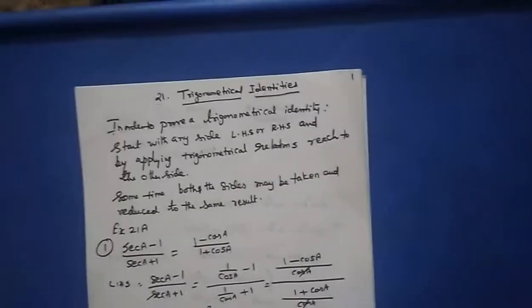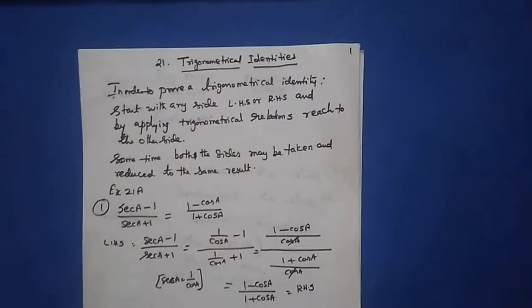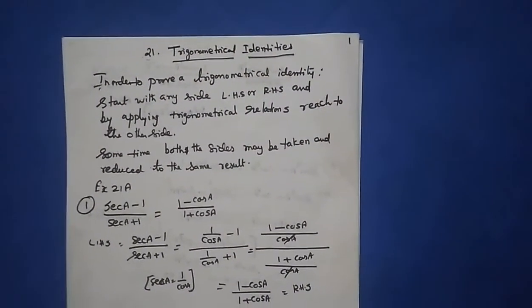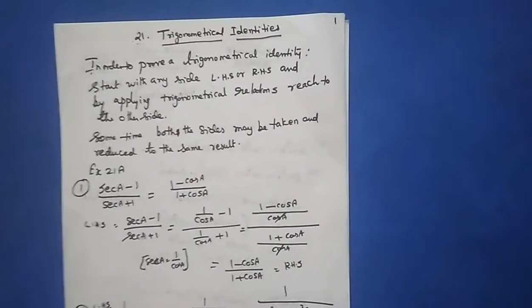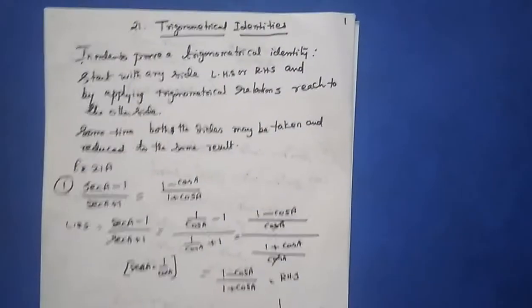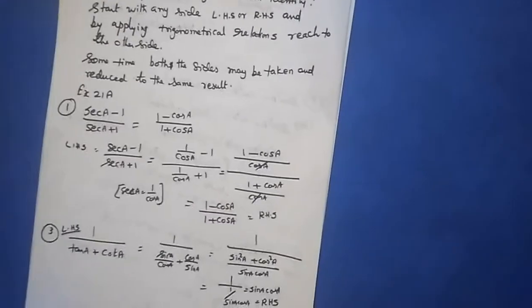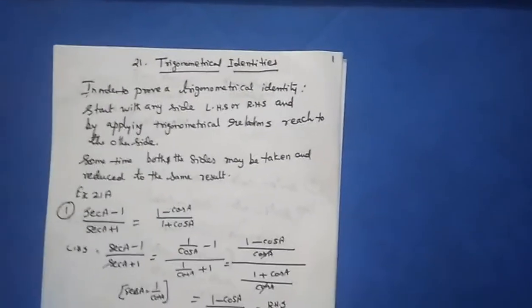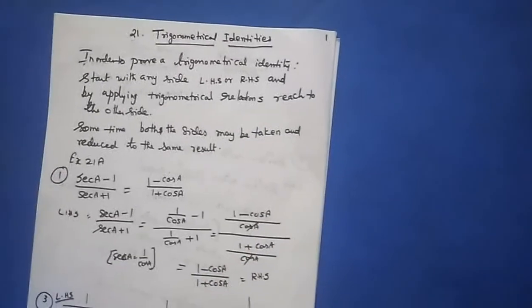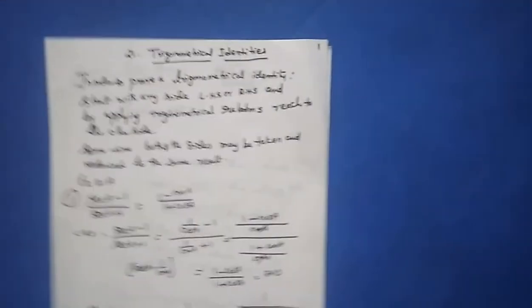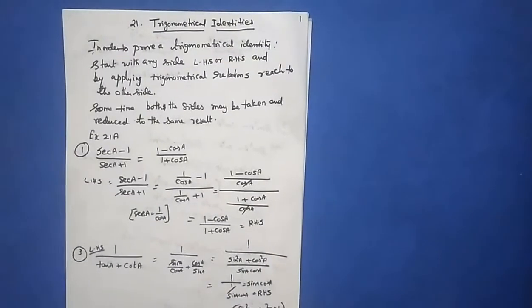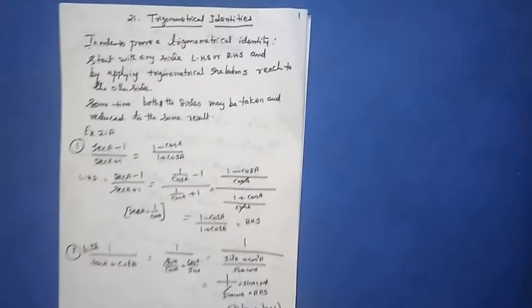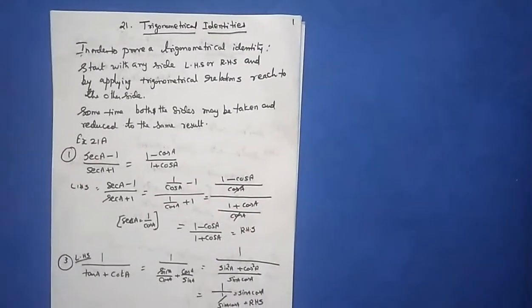Students, this is the trigonometrical identities problem. I already sent all the formulas — make sure you have learned them. Now I am going to explain the procedure to solve trigonometrical identities. To prove an identity, start with any one side. You can start from the left hand side and derive to get the right hand side, or start from the right hand side to get the left hand side.